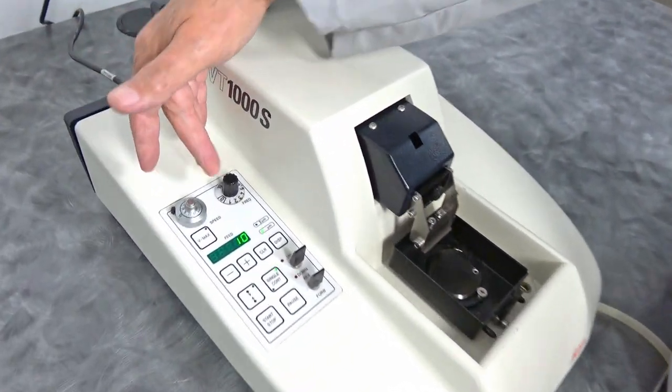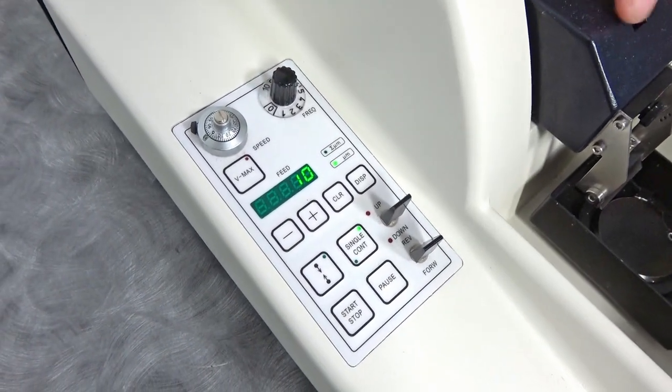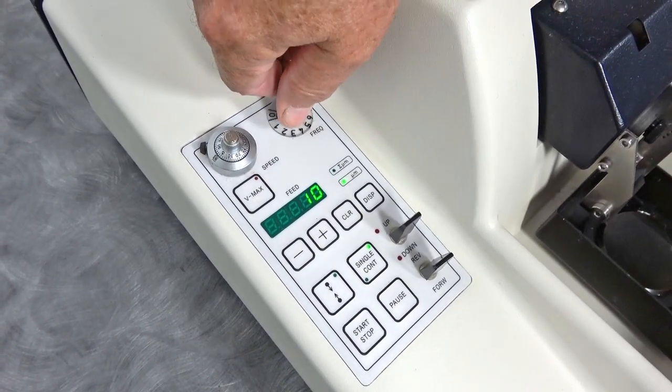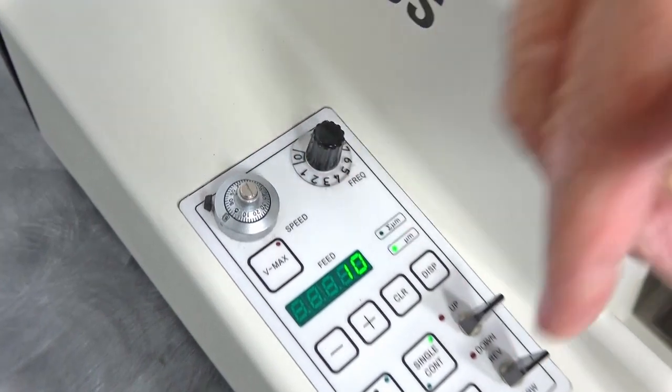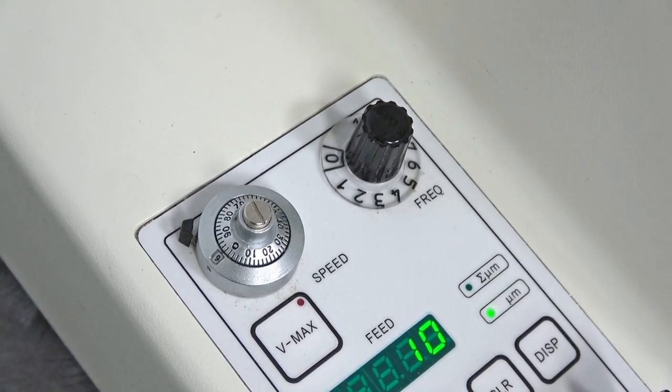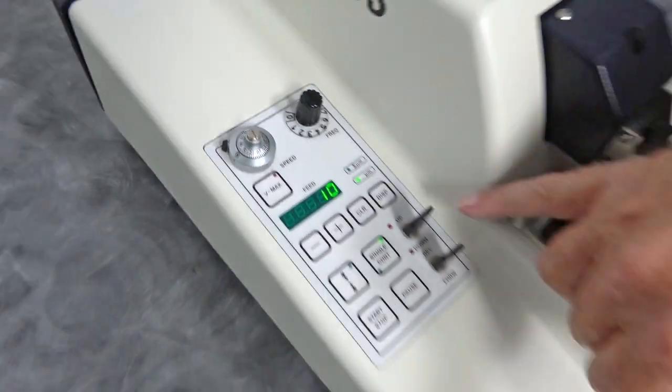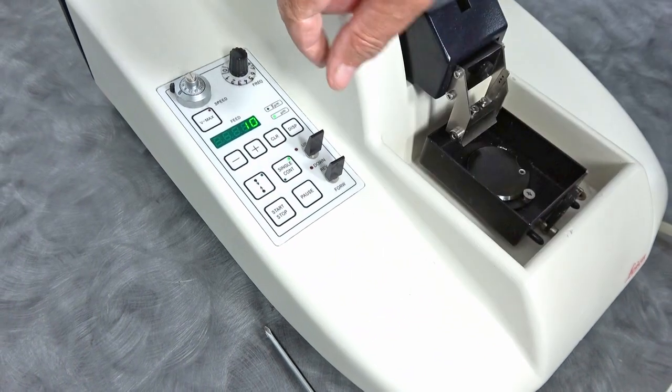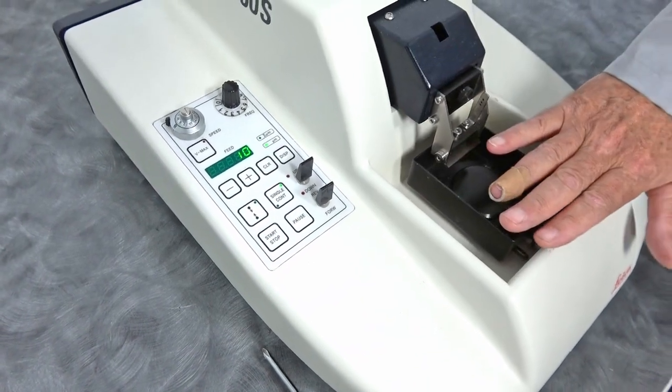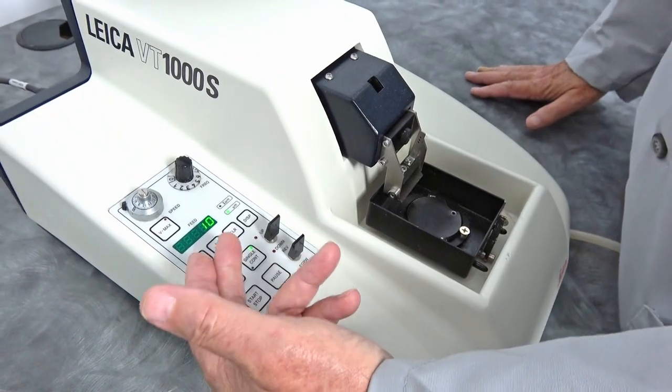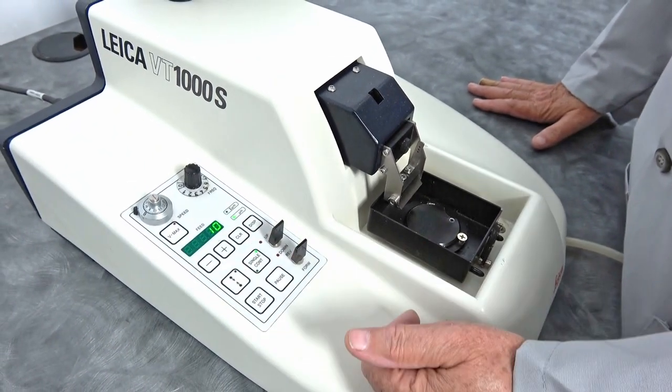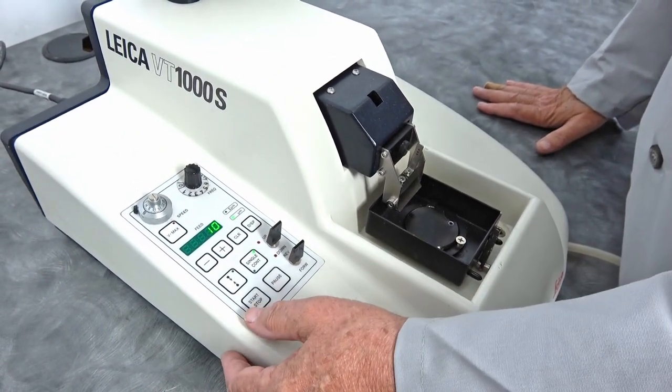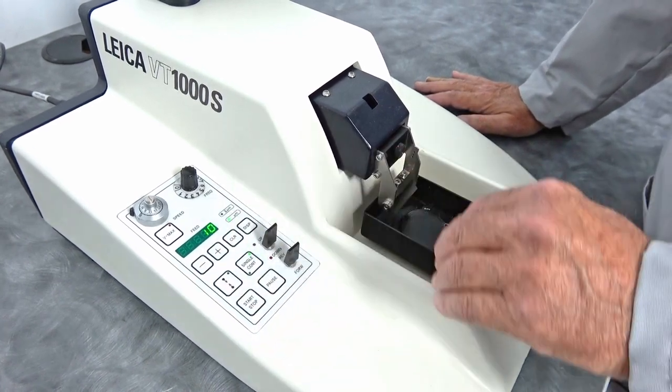On the controls, you can set the frequency of the vibration and the speed at which it advances the blade. Of course, you have your forward and reverse buttons and your up and down, which will raise and lower your stage. Once you've set your feed and frequency and everything that you want, you can press the start button and it'll go ahead and start.